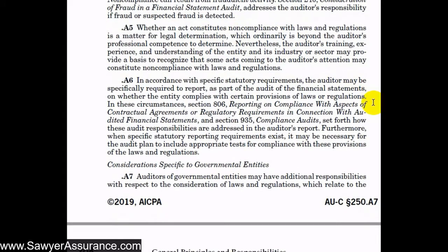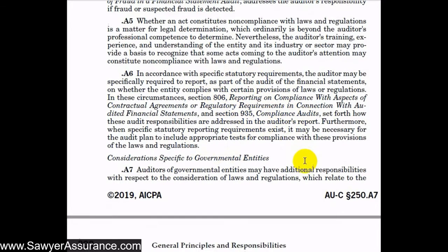In accordance with specific statutory requirements, we might be required to report specifically on the entity's compliance with laws or regulations. Those requirements come from AUC Section 806 and AUC Section 935, which we'll cover in later videos. If the client is specifically required to have an audit that reports on their compliance, then we would need to follow those sections.